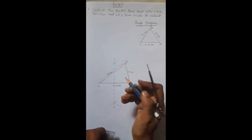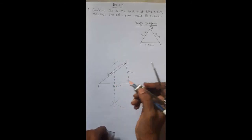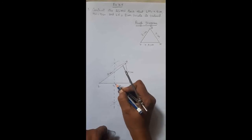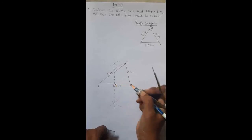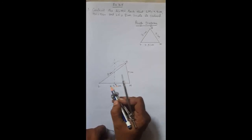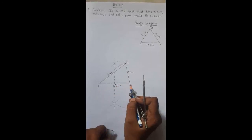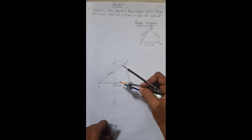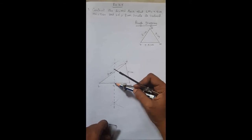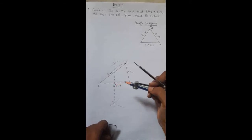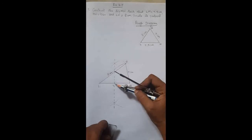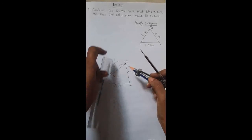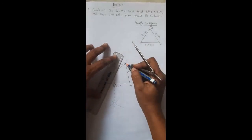Join the point of intersection and this point of intersection with a dotted line. Name this point X, so X is the midpoint of LM. The vertex opposite to midpoint X is N, so join N to X. NX is the median for triangle LMN.